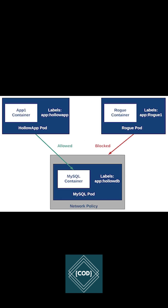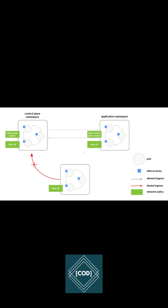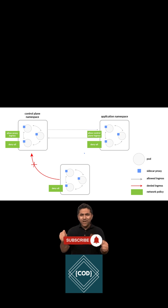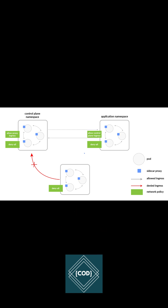Network policy resources allow us to restrict the ingress and egress traffic to and from the pods. Network policy is a standardized Kubernetes object to control the network traffic between the Kubernetes pods, namespaces, and cluster.